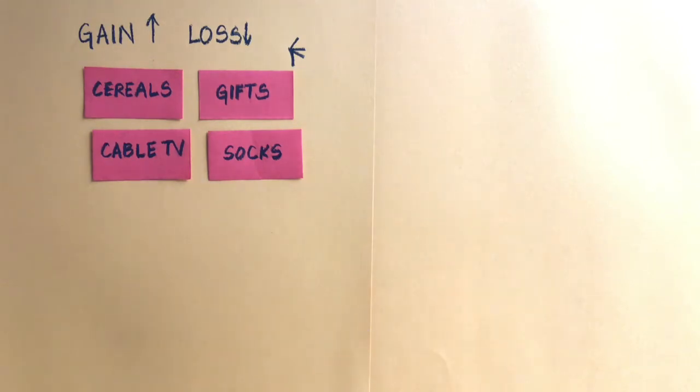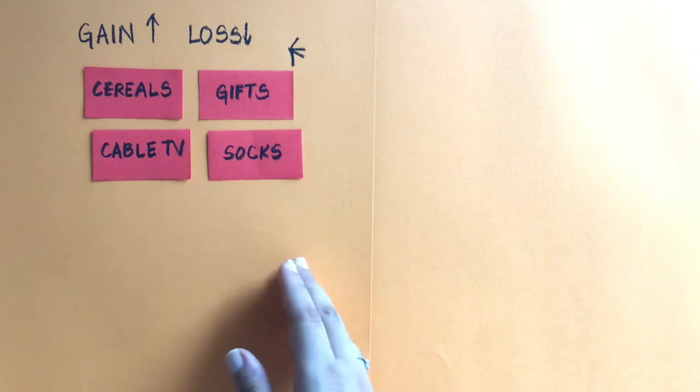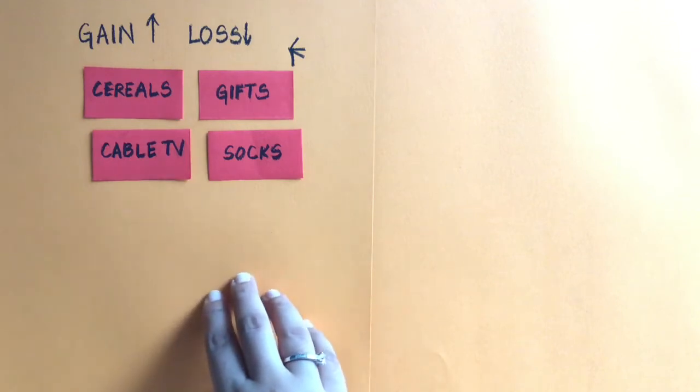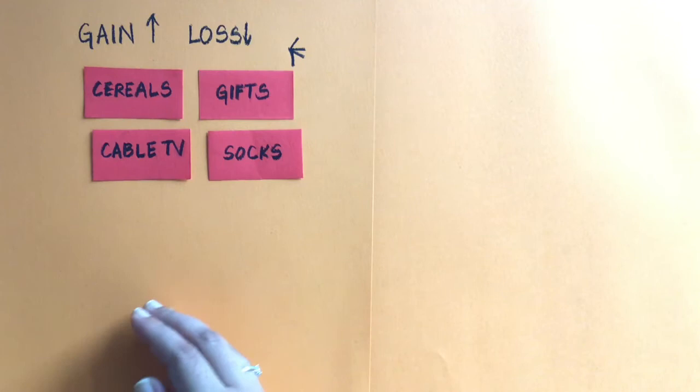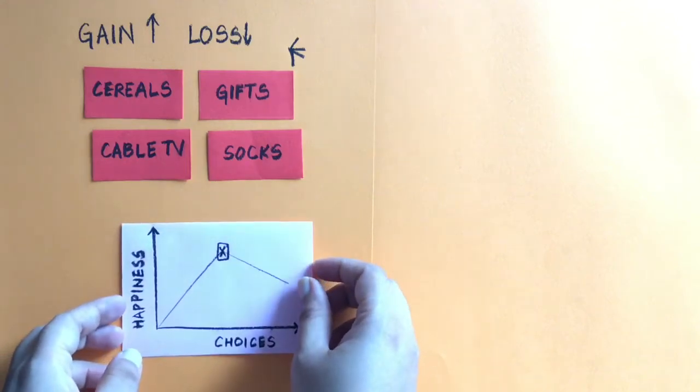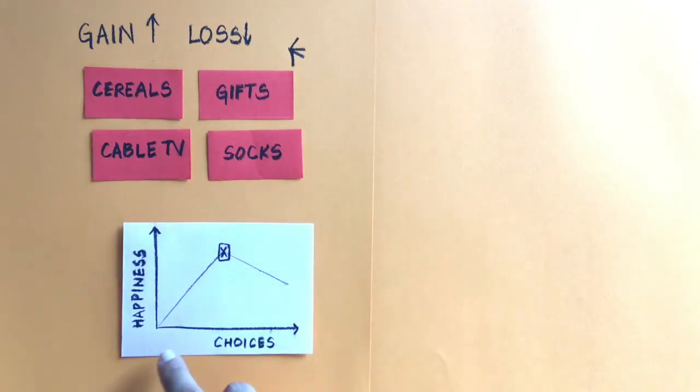Initially when we started out making decisions, if we had one or two choices it becomes very easy to decide, and when we get more choices we become more happy because we have more options. But if you look at this interesting graph I found online, there's only a point till where having a lot of options actually makes us happy, because after a point in time, too many options is not good for us. That ends up like the sock situation - making no decision at all.